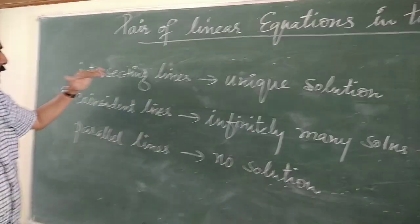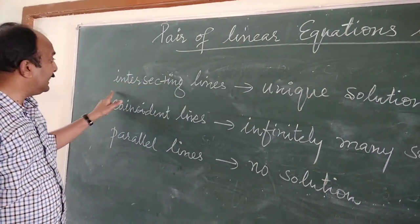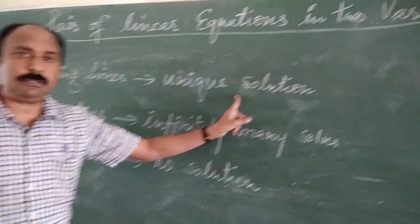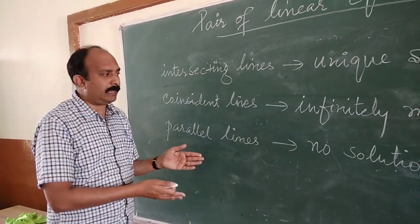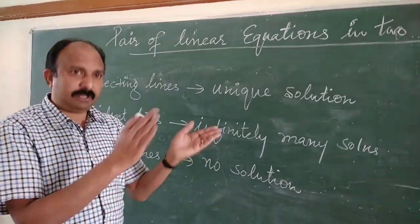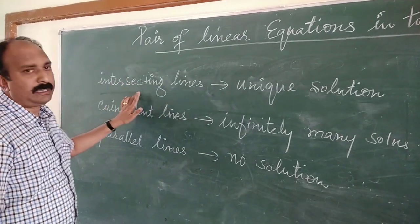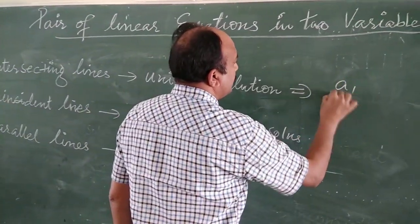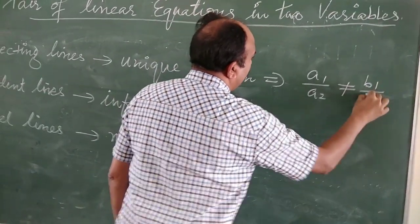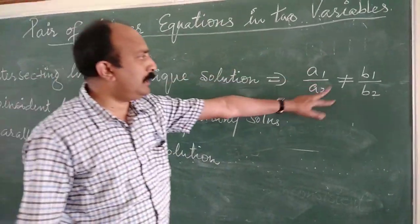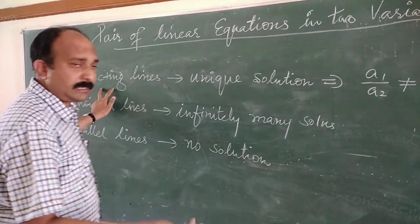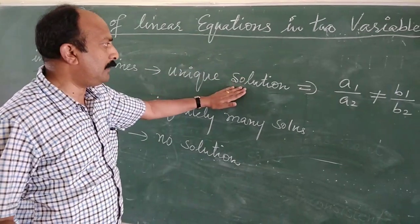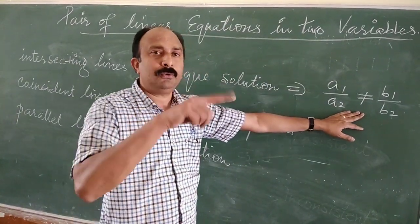To summarize: if the two graphs represent intersecting lines, the system has unique solution — one value of x and one value of y. If the graph represents coincident lines, the system has infinitely many solutions. If the graph represents parallel lines, the system has no solution. Comparing with earlier conditions: intersecting lines correspond to a1 upon a2 not equal to b1 upon b2, giving unique solution.